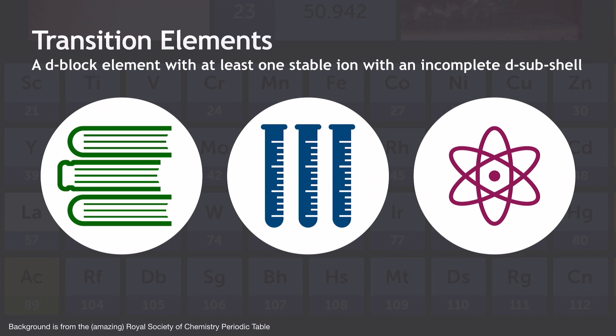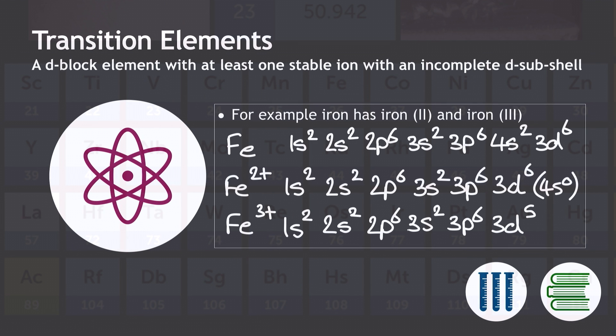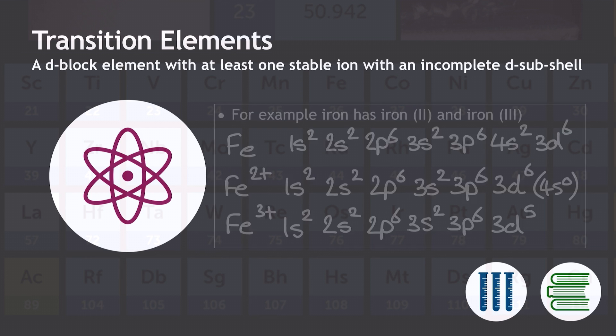Kicking off with a definition of transition elements, they're a D-block element with at least one stable ion with an incomplete D-subshell. For example, iron has got iron 2 plus and iron 3 plus ions, which as you can see here from these electron configurations have got those incomplete D-subshells.